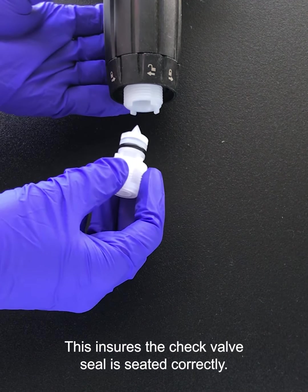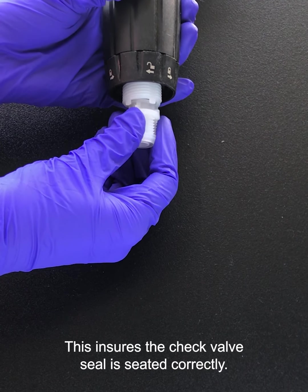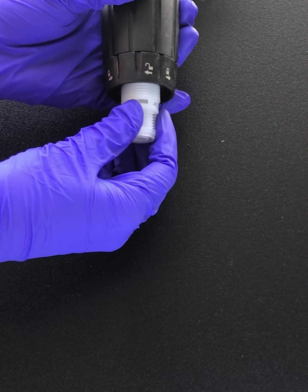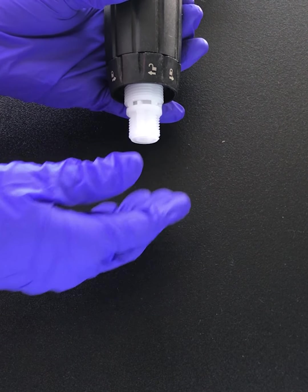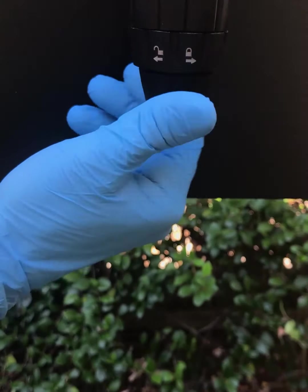Then it is time to reinsert it into the bottom of the stem assembly. You will feel the O-ring locking into place. Reattach the check valve and tighten hand tight.